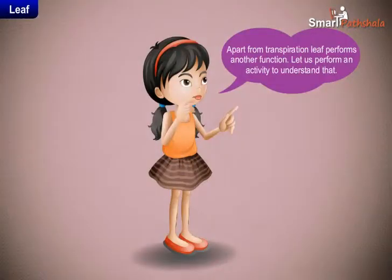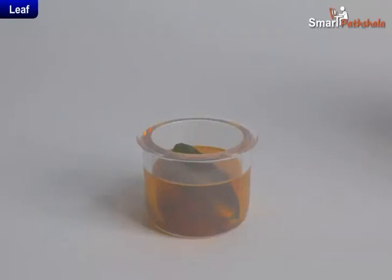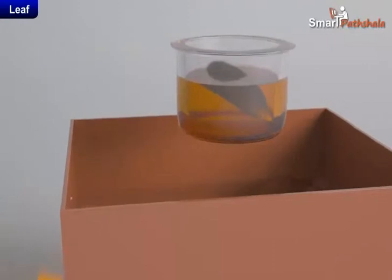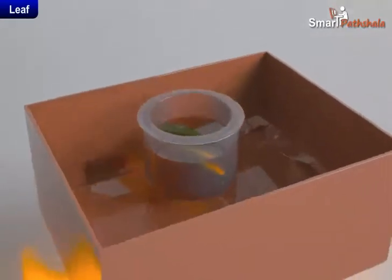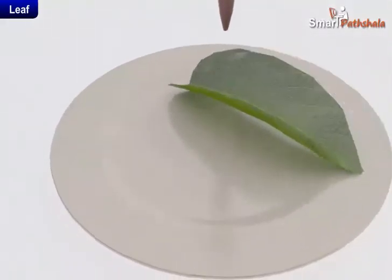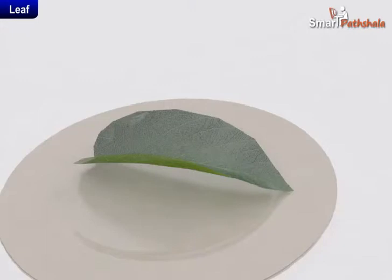Apart from transpiration, leaf performs another function. Let us perform an activity to understand that. Take a leaf in a test tube and pour spirit to completely cover the leaf. Now put the test tube in a beaker half filled with water. Heat the beaker till all the green color from the leaf comes out into the spirit in the test tube. Take out the leaf carefully and wash it in water. Put it on a plate and pour some iodine solution over it.